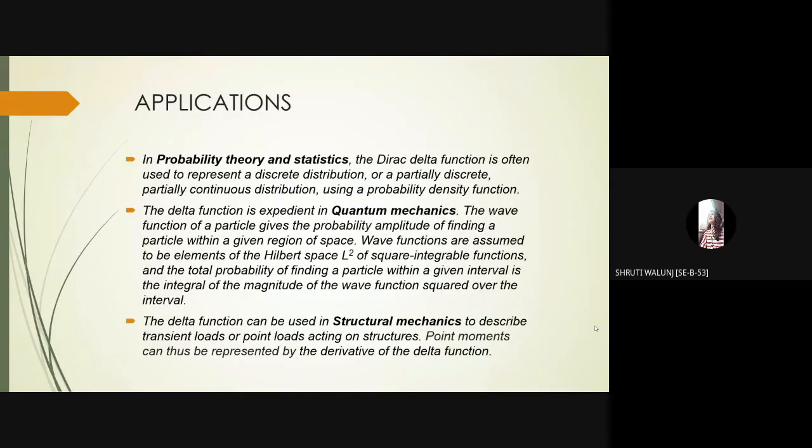Applications: The Dirac delta function is not a real function. It is instead an example of something called a generalized function or distribution. Despite the strangeness of this function, it does a very nice job of modeling sudden shocks or large forces to a system. It has a wide range of applications in probability theory and statistics, quantum mechanics, and structural mechanics. It is used to represent discrete distribution using a probability density function, to find a particle within a given space using probability amplitude, and to describe transient loads or point loads acting on structures using the derivative of delta function.